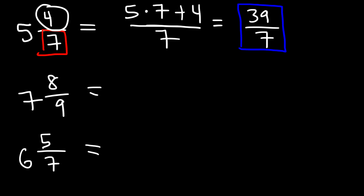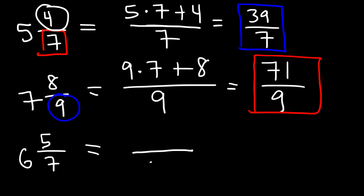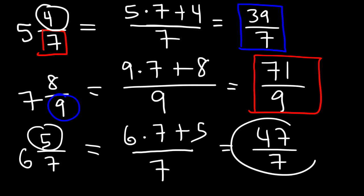For the next example, the denominator is nine. Multiply nine times seven, then add eight. Nine times seven is sixty-three, and sixty-three plus eight is seventy-one, so the answer is seventy-one over nine. For the last example, six times seven is forty-two, and forty-two plus five is forty-seven, so the answer is forty-seven over seven.